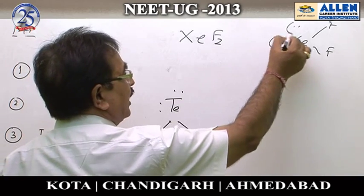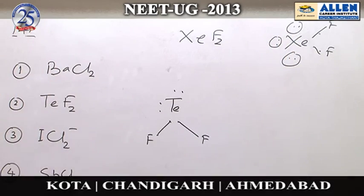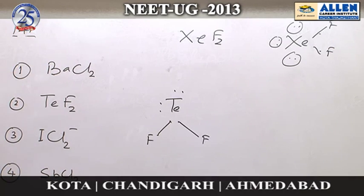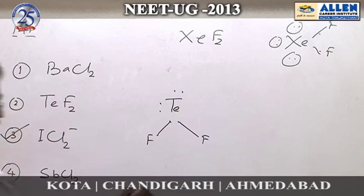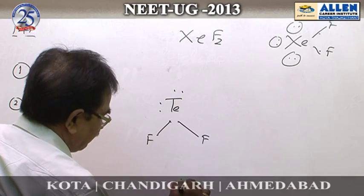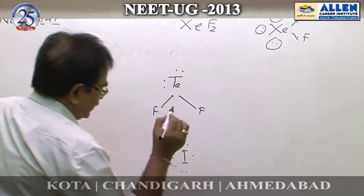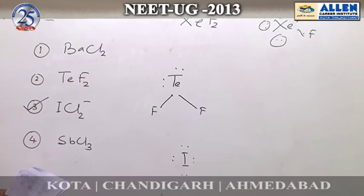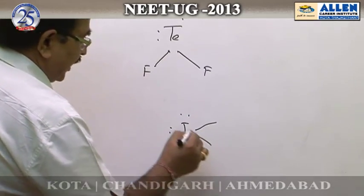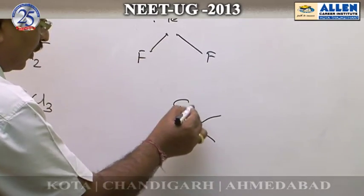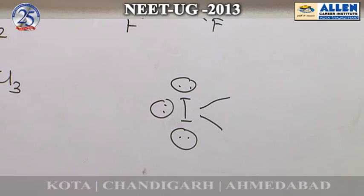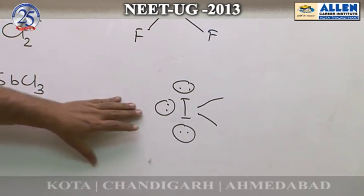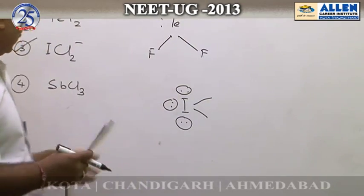So molecules having 3 lone pairs and 2 bond pairs should be isostructural with XeF2. Option number 3: in this molecule (ICl2⁻), iodine has 2 bond pairs and 3 lone pairs in the valence shell. Therefore, ICl2⁻ is isostructural with XeF2.